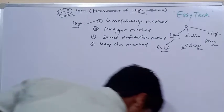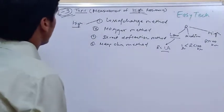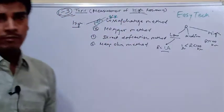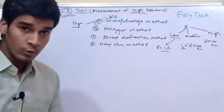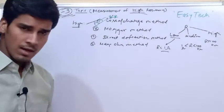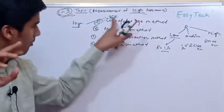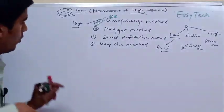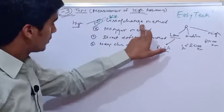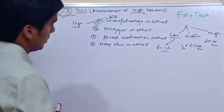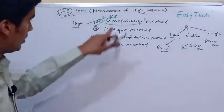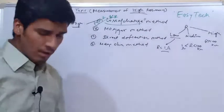You should have clarity on the loss of charge method. In every year in the GATE examination, you may find a question from this method. If a question comes from the category of measurement of resistances, it will either be based on the Wheatstone bridge or the loss of charge method. We will first understand the theory behind it — why the name is 'loss of charge' and why this method is used to find high resistance.